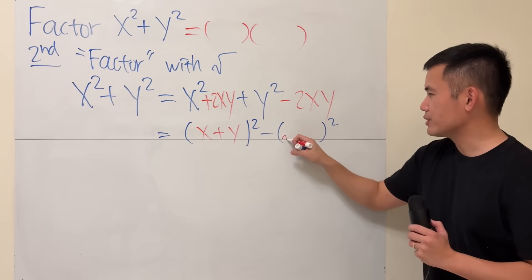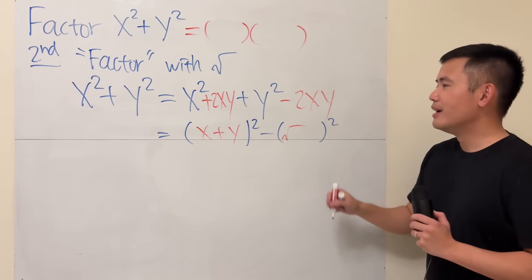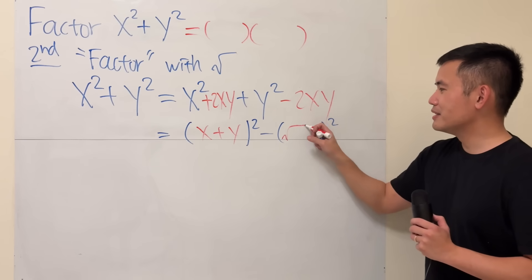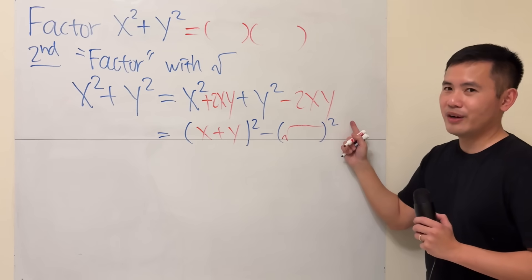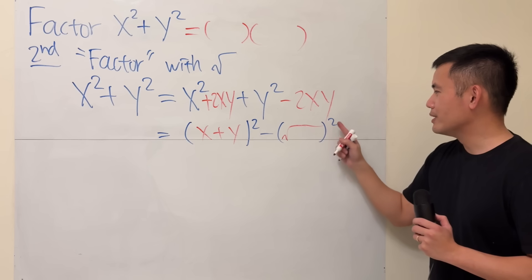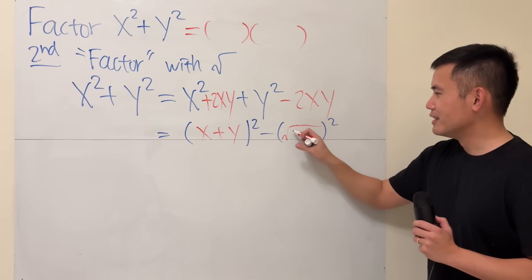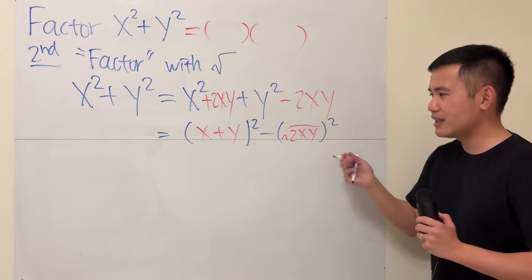And what square will give us x? The answer is square root of x squared. Likewise, square root of y squared will give us y. So, we just have to put all these three things in here, square root of 2xy, like that.